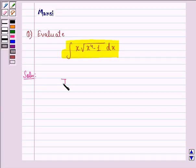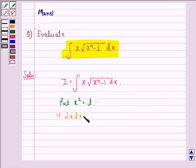Let I be the integral that is given to us: integral x into square root x raised to power 4 minus 1 dx. Now here we put x square to be equal to t. Now differentiating both sides we get 2x dx is equal to dt.